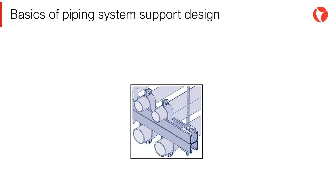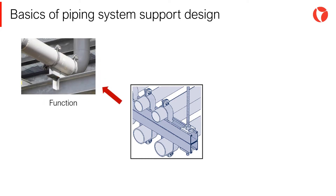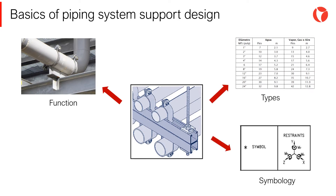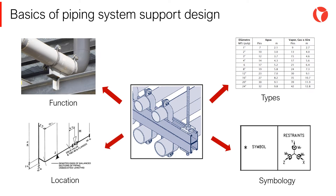The fundamental aspects when designing supports for an industrial installation are: know the functionality of each type of support, master the different types of supports, establish the symbology between the flexibility and supports department, and locate the supports appropriately depending on the type of installation.